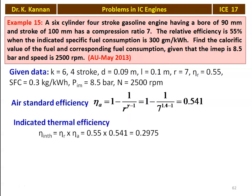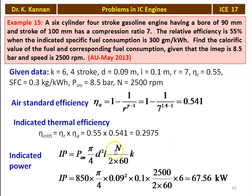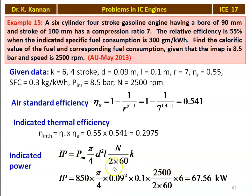From the relative efficiency, we calculate the indicated thermal efficiency: indicated thermal efficiency = relative efficiency × air standard efficiency = 0.55 × 0.541 = 0.2975. The indicated power: IP = P_IM × (π/4) × D² × L × N/(2 × 60) × K. This is a 4-stroke cycle engine so we divide by 2 × 60. Substituting: 850 kilo Pascal × (π/4) × 0.09² × 0.1 × 2500/(2 × 60) × 6 = 67.56 kilowatts.